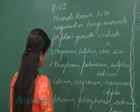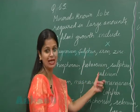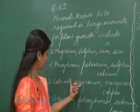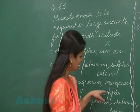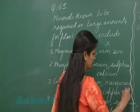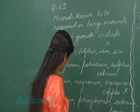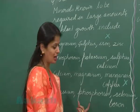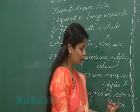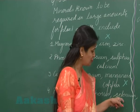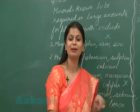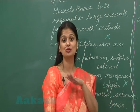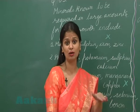Phosphorus, potassium, sulfur, and calcium are all macronutrients. Calcium and magnesium are macro, while manganese and copper are micro, so that option is wrong. Potassium and phosphorus are macro, but boron is micro, and selenium is a beneficial element not required by all plants.